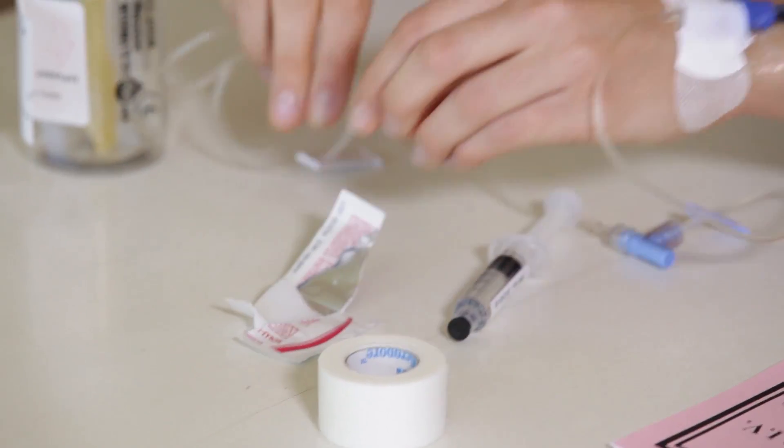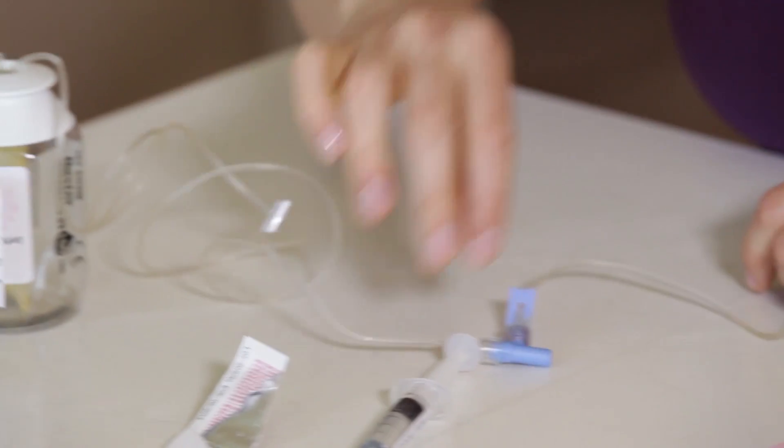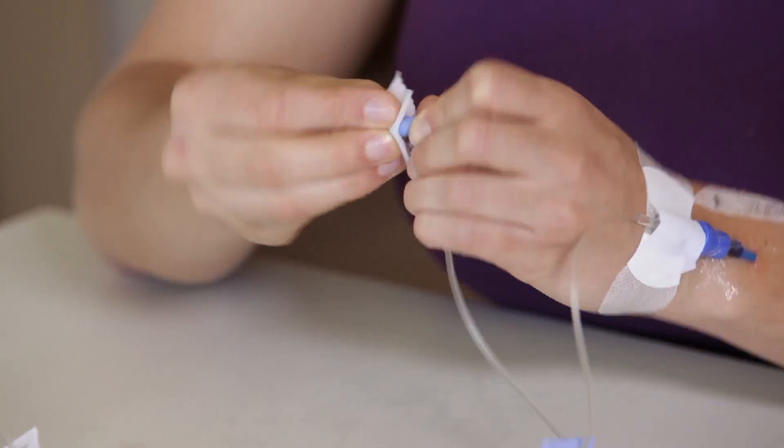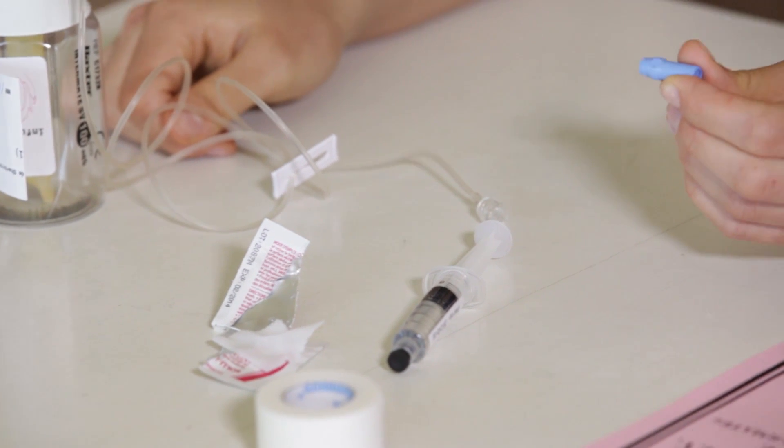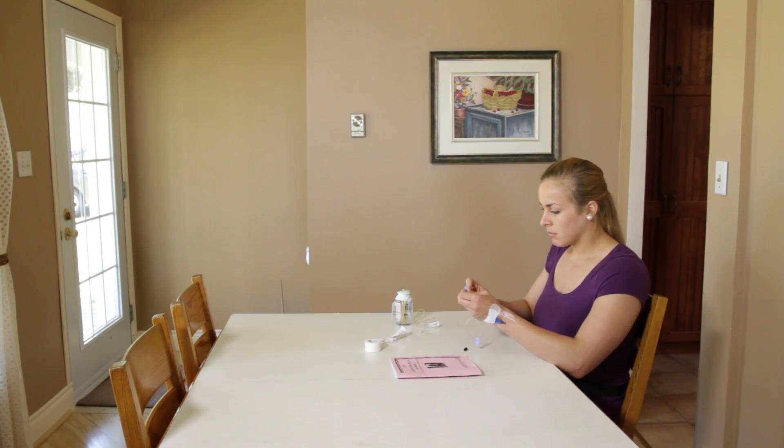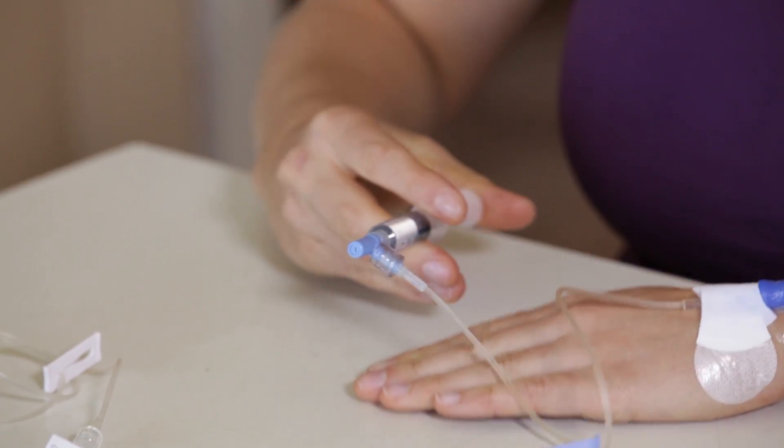Open an alcohol swab. Close the tube clamp on the infuser. Holding the extension tubing from the catheter, unscrew the tubing from the infuser. Using the third alcohol swab, disinfect the tip of the extension tubing and let it dry for 30 seconds. Take the second saline solution syringe, remove its cap, and screw it into the end of the tubing. Slowly inject the saline solution over 15 seconds.